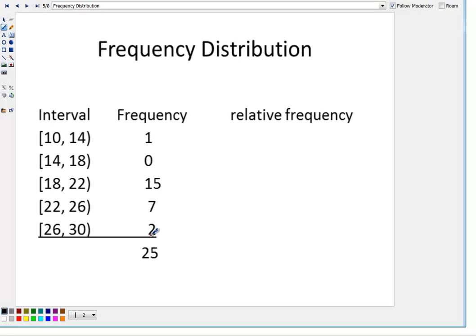So this is my frequency table. What we're going to do is calculate the relative frequency. To do that, as I said, we have 25 people in my data set. To calculate the relative frequency, we're going to take the frequency for that particular interval and divide by the total number of people.